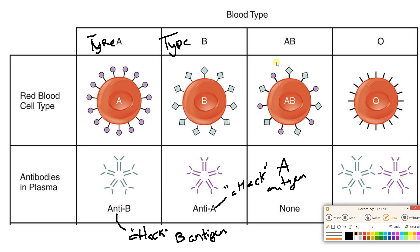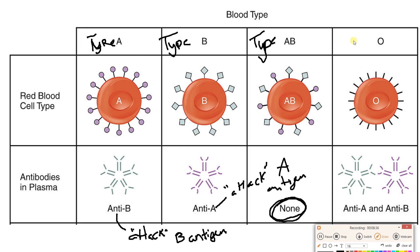Our third person is blood type AB — they had both the A and the B antigens on their surface, which means they have neither antibody, because neither antigen would be foreign to them. And my last person is type O. Type O has neither the A nor the B antigen, so both would be foreign, and in their plasma they've got both varieties of antibodies: anti-A and anti-B.